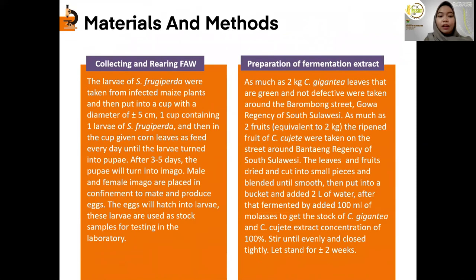Materials and Method. First, collecting and rearing Spodoptera frugiperda. The larvae were taken from infected maize plants and then placed into a cup with a diameter of around 5 cm, one cup containing one larva. After three to five days, the pupa will turn into imago. Male and female imago are placed together to mate and produce eggs. The eggs will hatch into larvae, which are used as stock samples for testing in the laboratory.